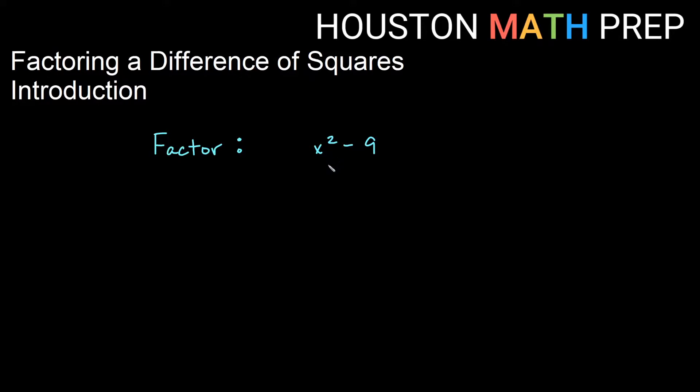If you look here, we're calling this a difference of squares because this is a perfect square. It is x times x and this is a perfect square. It is 3 times 3 and the word difference in math means subtract. So I have subtraction between two terms and they are perfect squares. So this is a difference of squares.